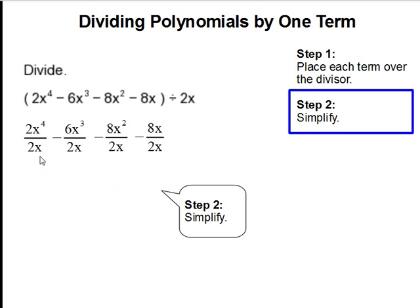So 2x to the fourth divided by 2x gets you x to the third. 2 over 2 cancels out and x to the fourth divided by x is x to the third.